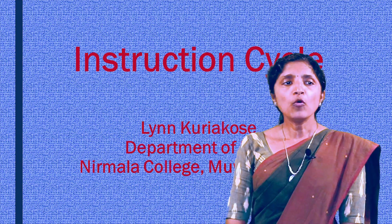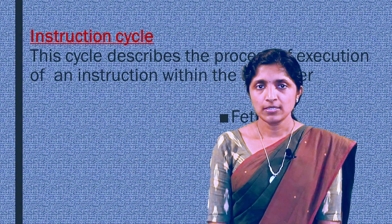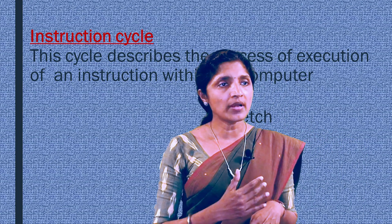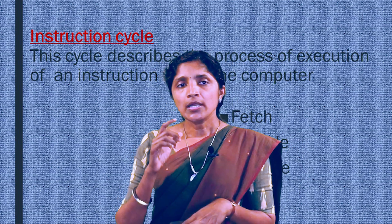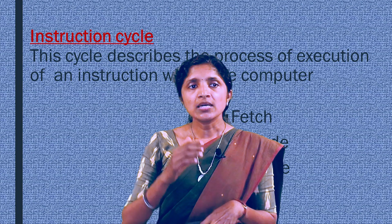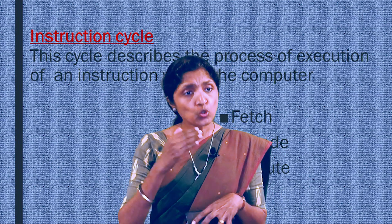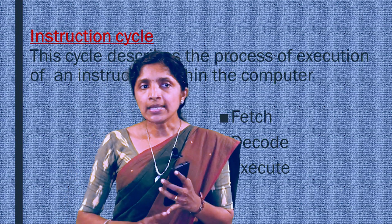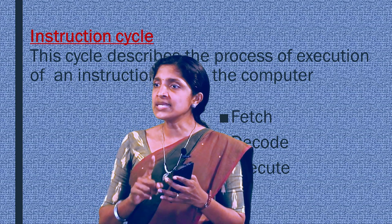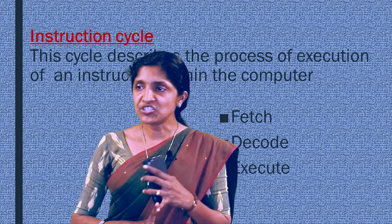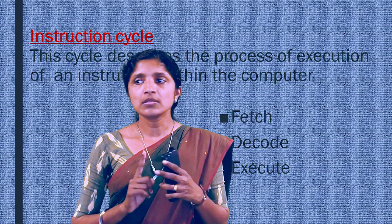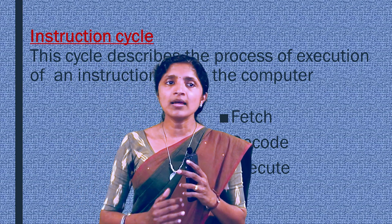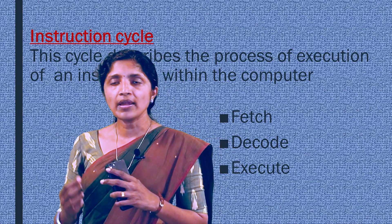Now we will come to instruction cycle. We already know what an instruction is and that it is stored in the memory unit of a computer. Instruction cycle means the sequence of steps through which each instruction has to go in order to process it. Mainly, the instruction cycle consists of three steps: fetching, decoding, and executing. In other words, the instruction cycle is also known as the fetch-decode-execute cycle.